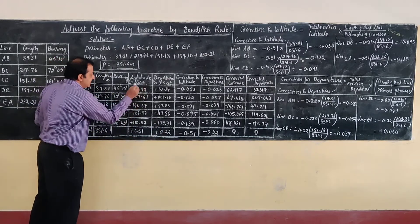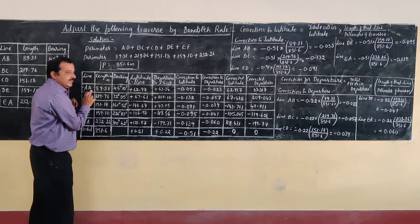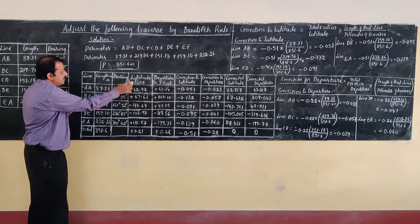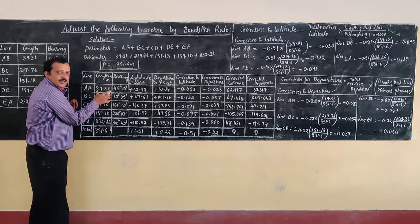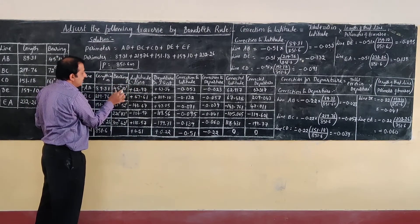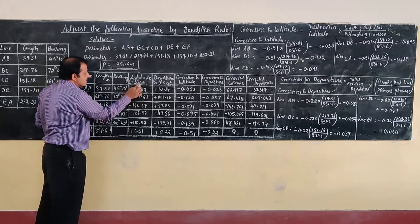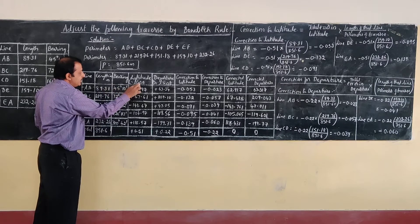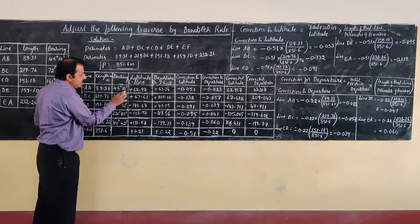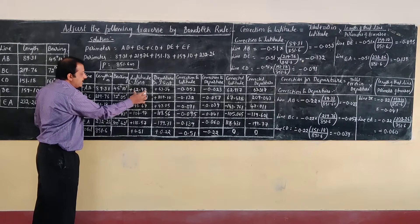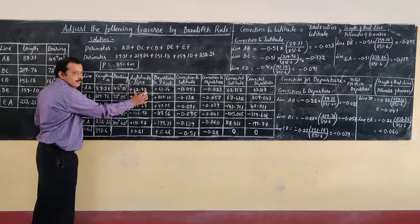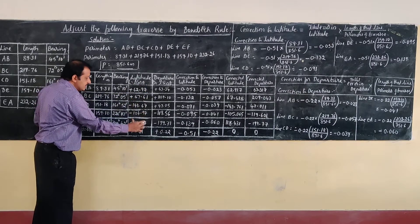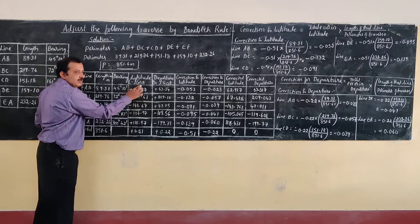For example, the latitude of line AB is given by L cos θ, which is 89.31 × cos(45°10'). That gives you the latitude of line AB. Similarly, find the latitude of all other lines using the formula L cos θ.